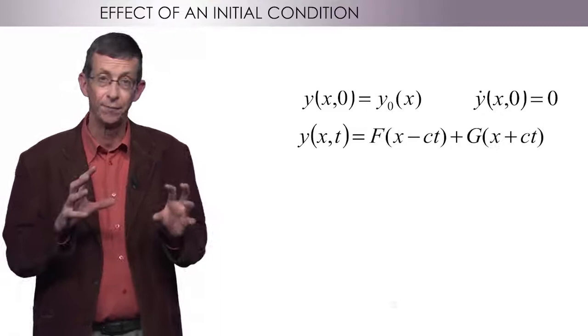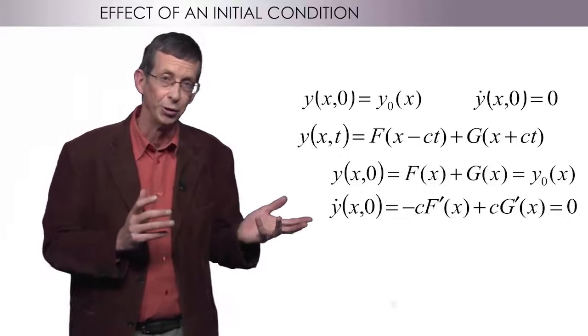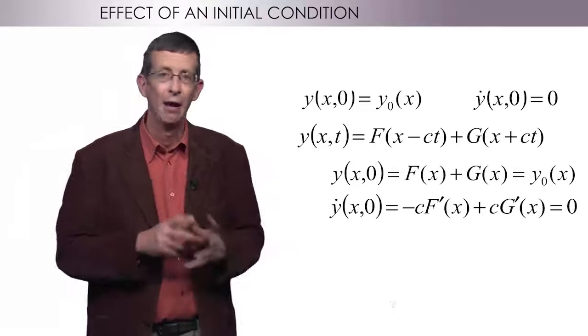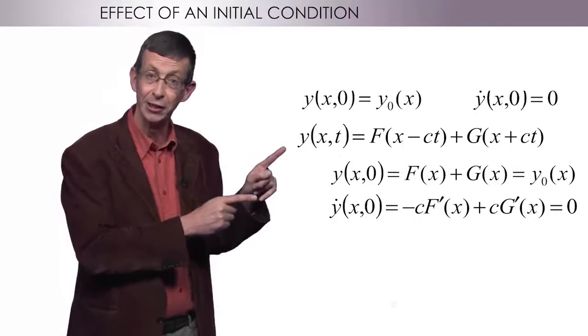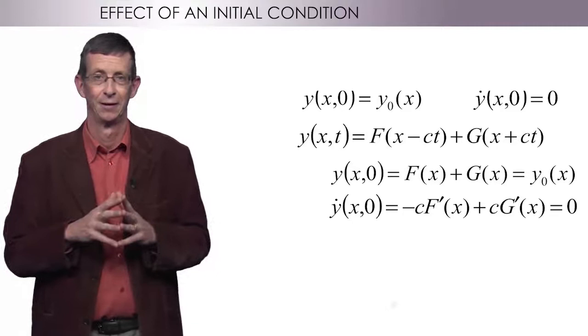So, using the initial conditions, I have y of x and zero, which is f of x plus g of x equals y naught. And y dot of x and zero, which is minus c f prime plus c g prime equals zero. From this, you get that f and g equals one half of the initial condition y naught.